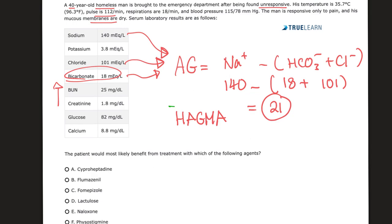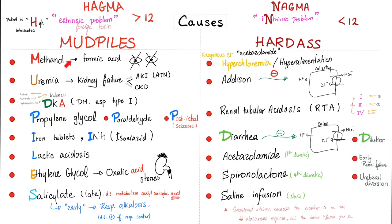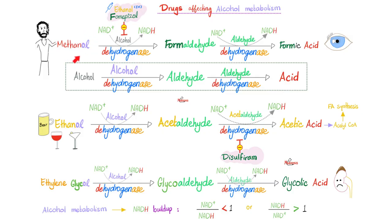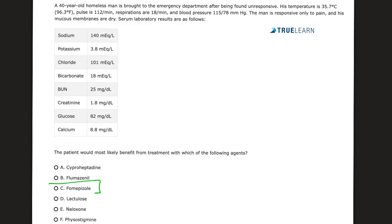Given the fact that this patient is an alcoholic homeless person, what do you think the cause is? Out of my MUD PILES acronym, it's probably one of the alcohols — like methanol, ethylene glycol, etc. And what do we do for that? To inhibit the metabolism of methanol, we give a medication that inhibits alcohol dehydrogenase so that the alcohol is not metabolized to its toxic metabolic products. So the answer here is fomepizole.